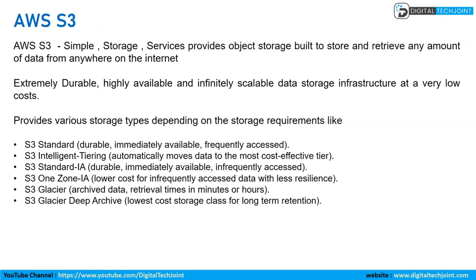Then we have Amazon S3 — Simple Storage Service — one of the most famous services used in AWS. It provides object storage built to store and retrieve any amount of data from anywhere on the internet. S3 has various storage tiers: S3 Standard (frequently accessed), S3 Intelligent-Tiering (automatically moves data to the most cost-effective tier), S3 Standard-IA, S3 One Zone-IA, S3 Glacier for archive data, and S3 Glacier Deep Archive for very infrequently accessed data at the lowest cost.